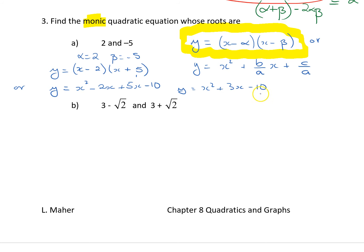c, which is minus 10, is the product of the roots, 2 times minus 5 is minus 10.